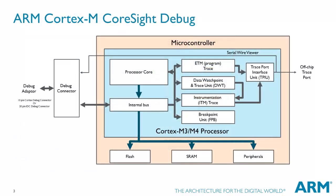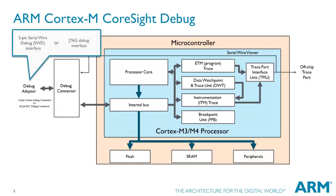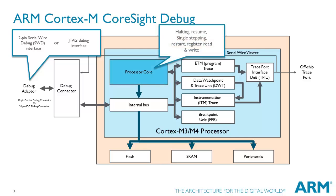The Cortex-M cores can be debugged over a 2-pin serial wire debug interface or an industry-standard JTAG interface. The Coresight components embedded in the core support halting, resume, single-stepping, restart, and register read and write.